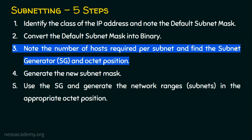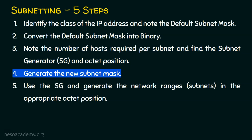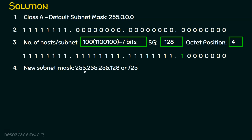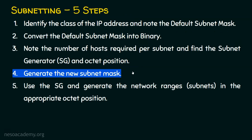Step number four: generate the new subnet mask. We have all ones in the first three octets giving 255.255.255, and the fourth octet is 128. So the new subnet mask is 255.255.255.128. In slash notation, that is 8 plus 8 plus 8 equals 24, plus 1 more one, giving slash 25.